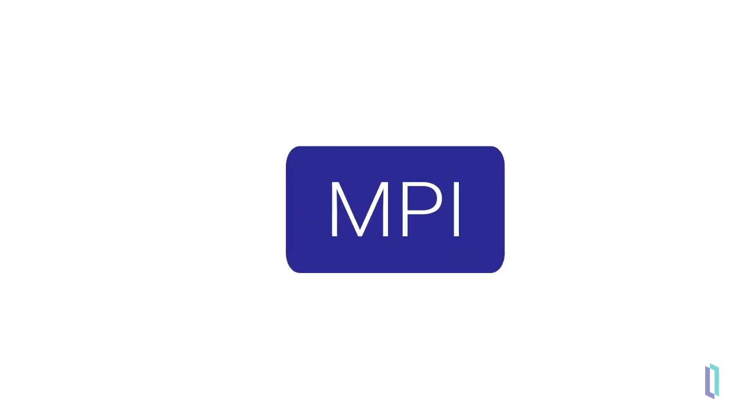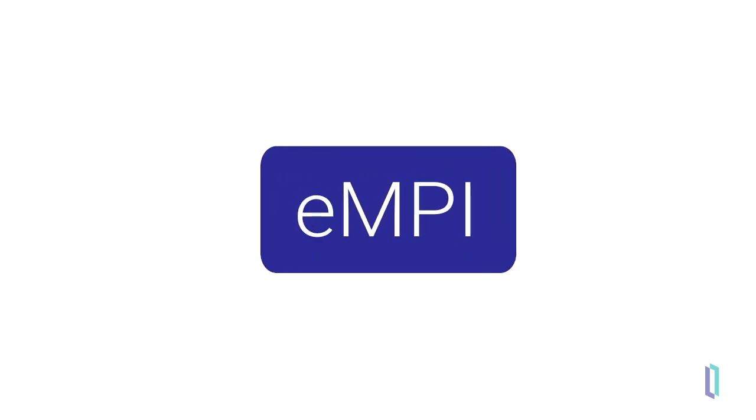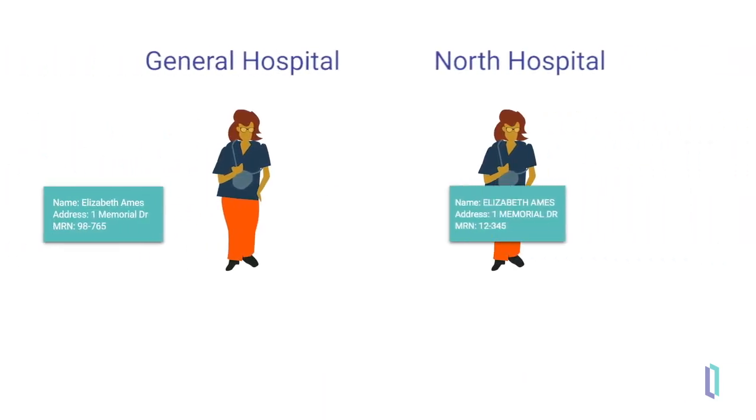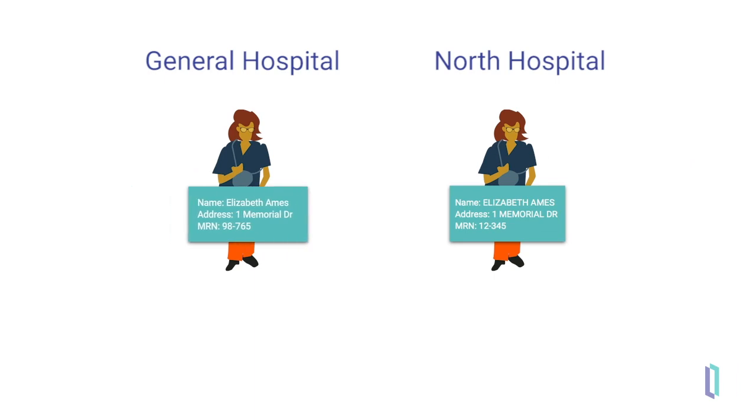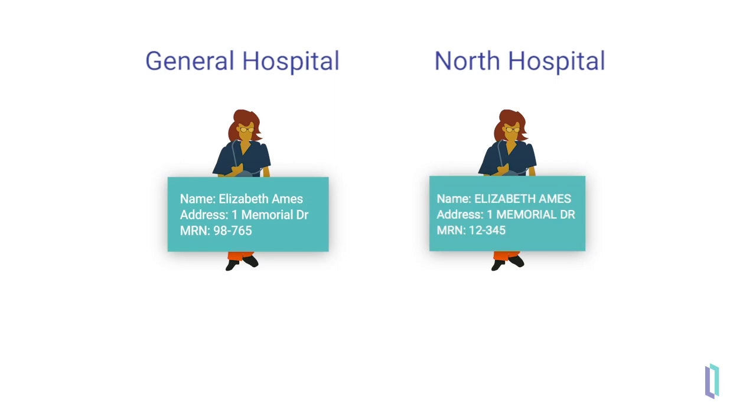In many cases, a Master Patient Index and an Enterprise Master Patient Index can be used interchangeably. In a network of healthcare organizations, one patient could have multiple medical records throughout the enterprise. Let's take Elizabeth Ames' MPI record as an example.